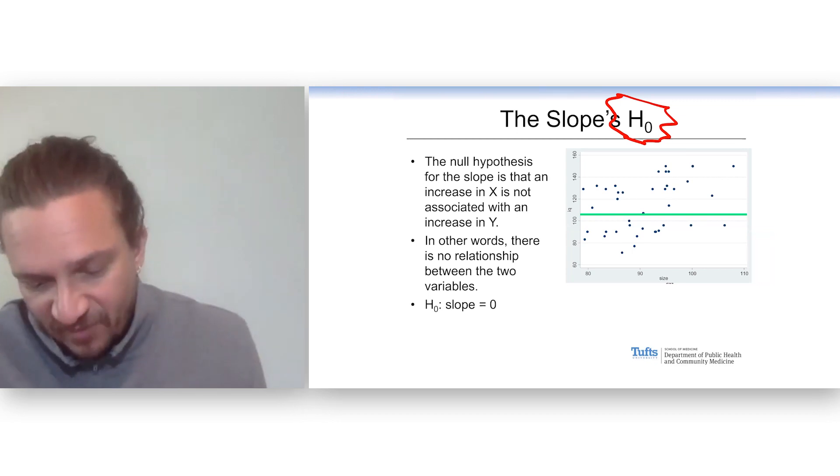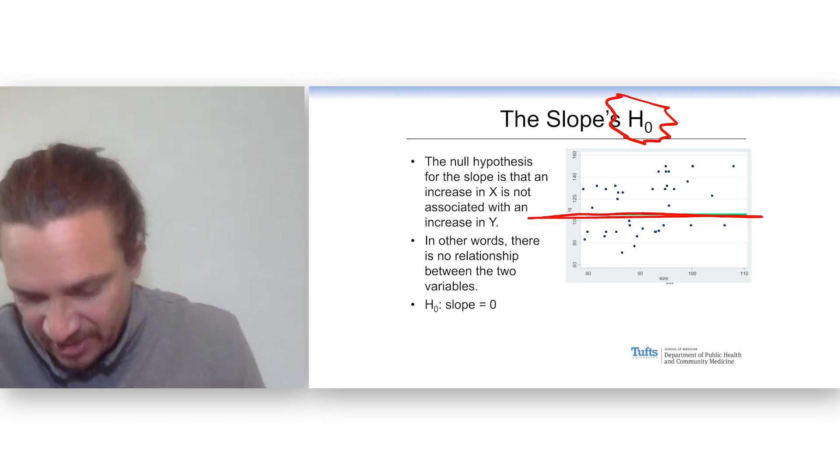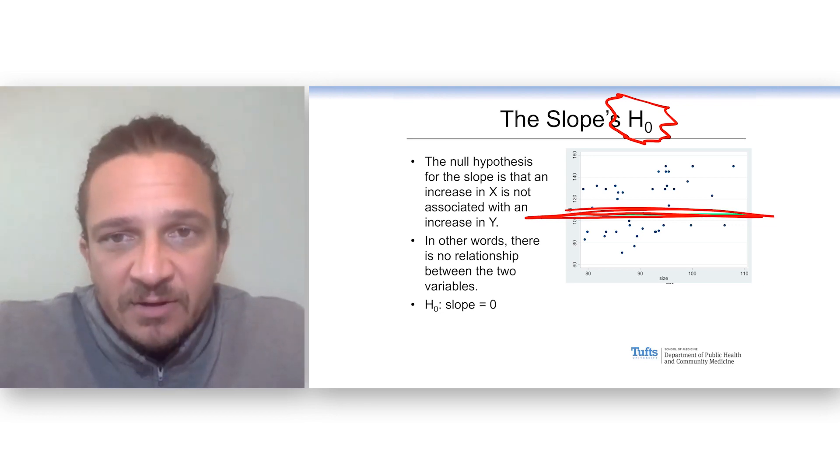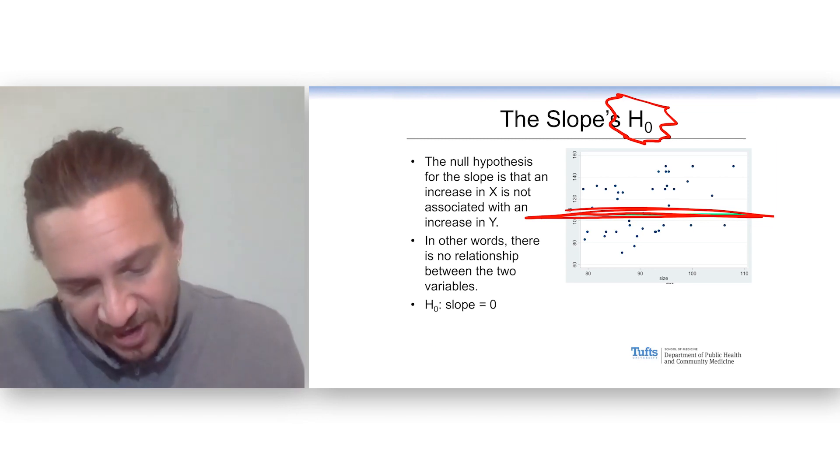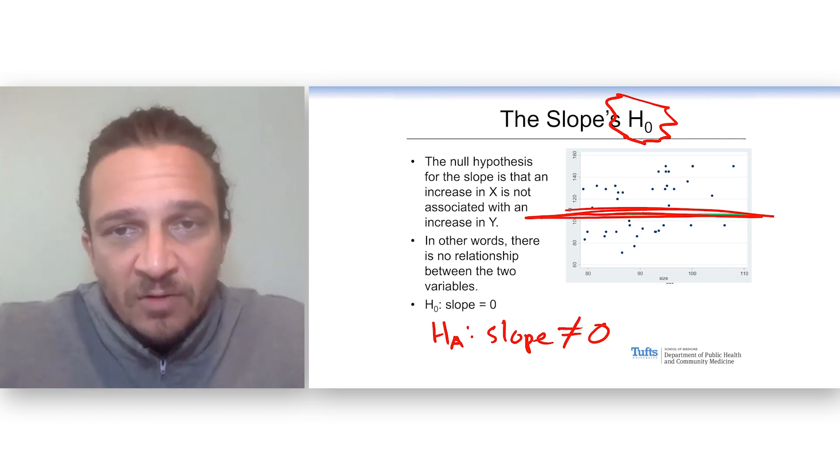There's no relationship. And for the regression, that would look something like this. A flat line. So, the null hypothesis is there's nothing going on. And the alternative hypothesis would just be that the slope is not equal to zero.